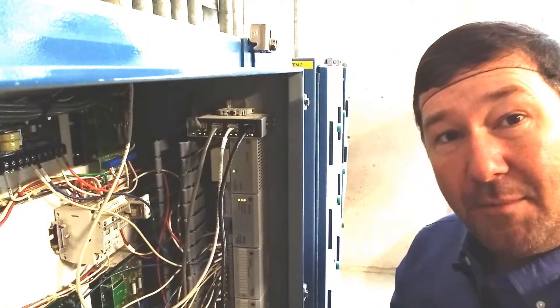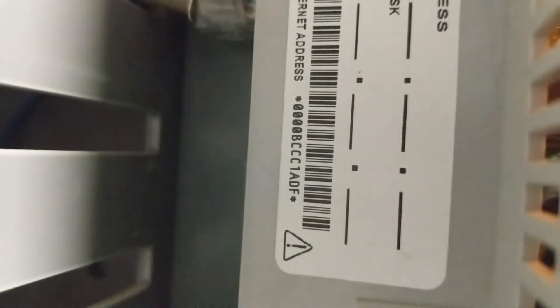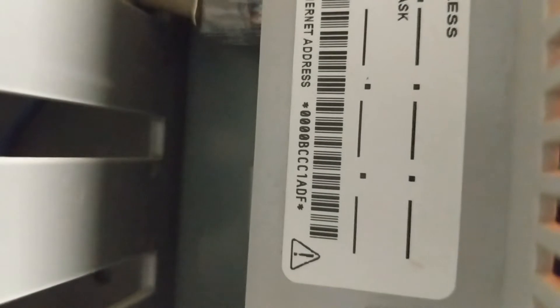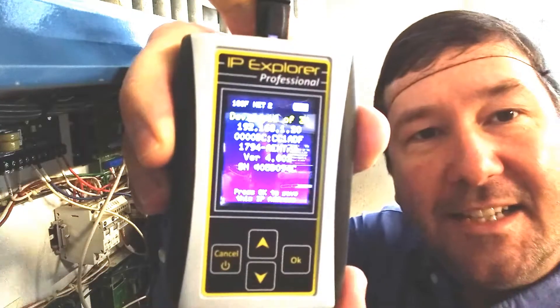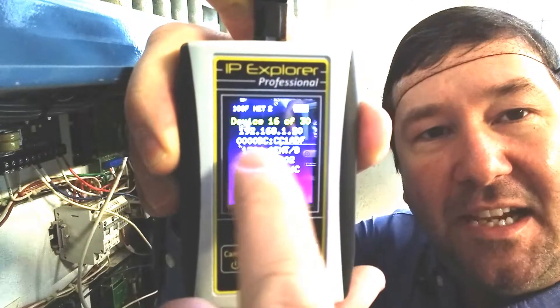But I want to make sure that I'm on the correct device. And if I look in here on the 1794AENT, I can see that the MAC address is 0000BCCC1ADF. And that is the same MAC address that I'm seeing right here.